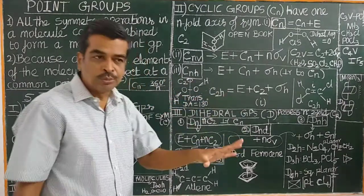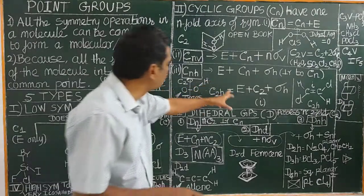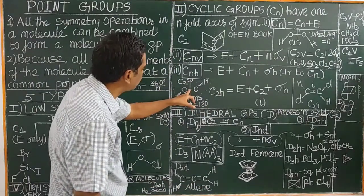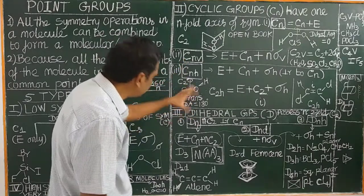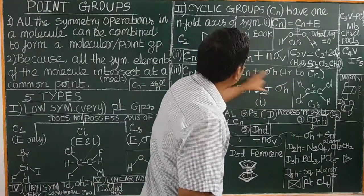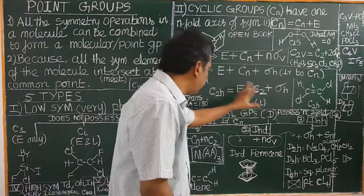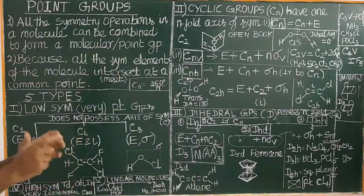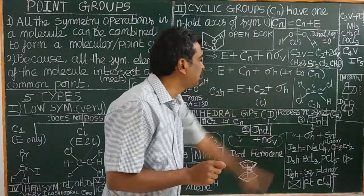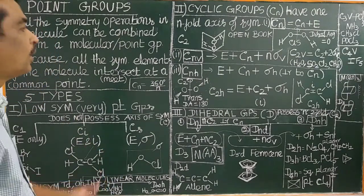Why is it called a point group? Because all the symmetry elements of the molecule meet at a common point. So it is called a point group. In other words, each point group is a collection of symmetry operations that are possessed by the molecule, that are carried out on a molecule.